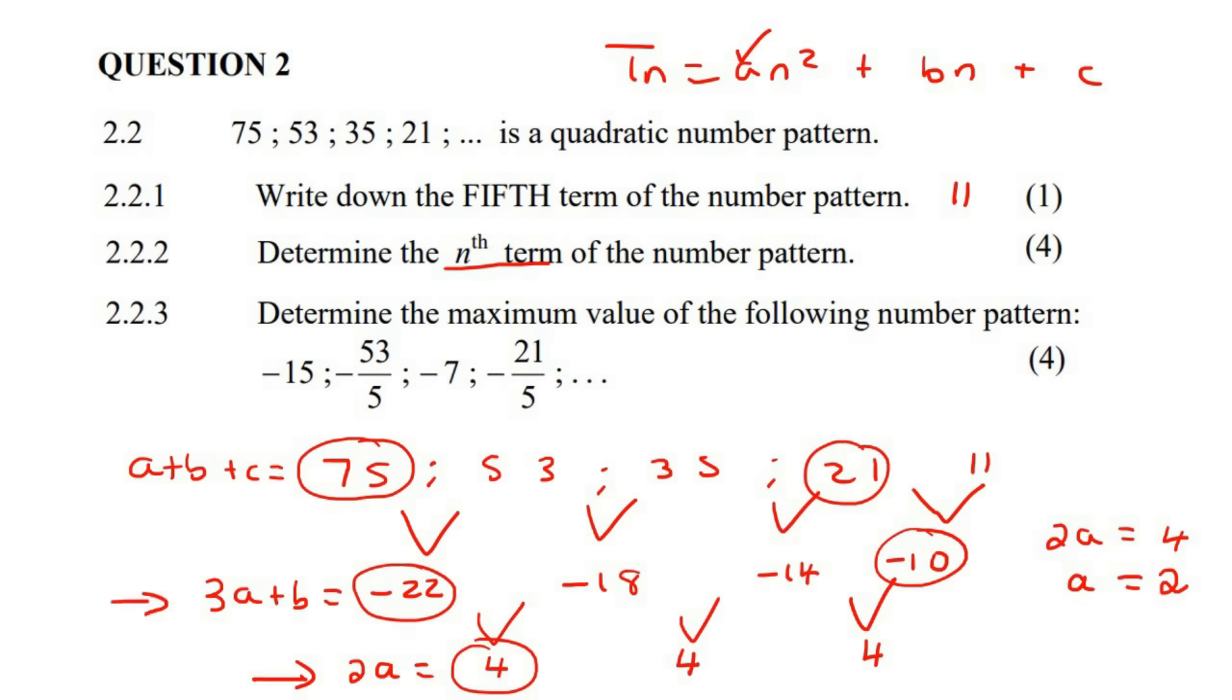Then you go up one level to this one over here, so that's 3a plus B. So you say 3a plus B equals to negative 22. A is 2 from the previous part. And then you just say 6 plus B equals to negative 22. And so if you had to take the 6 over, you'd end up with negative 28.